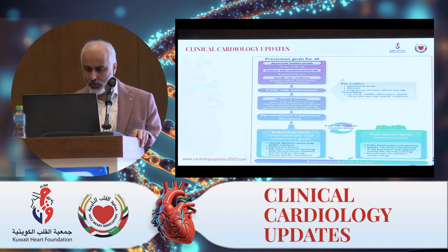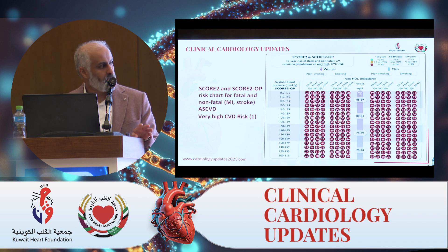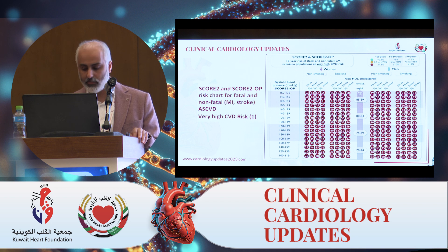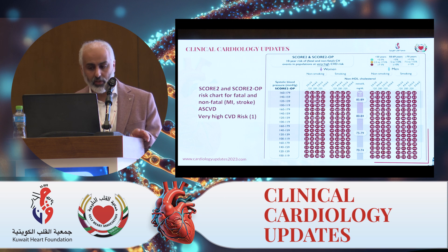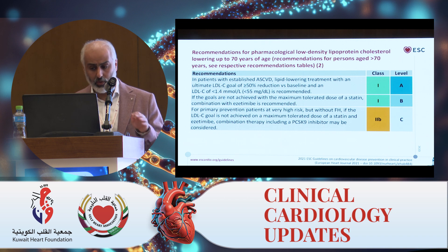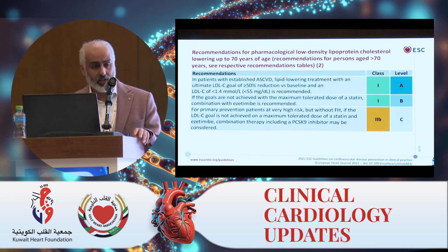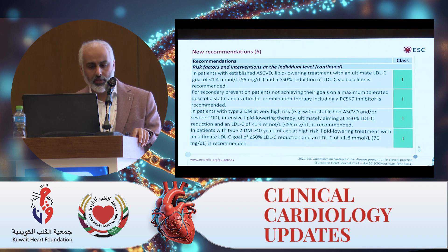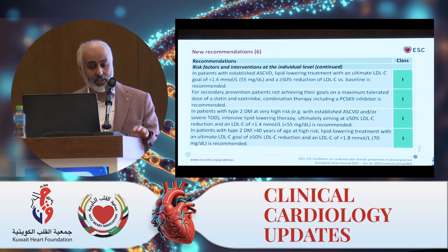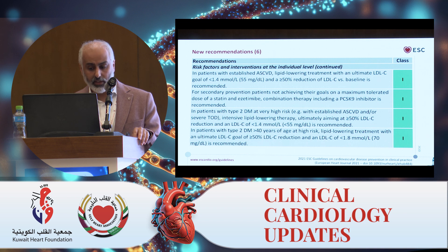In terms of the ESC 2021 guidelines — a very comprehensive paper looking at all cardiovascular risk factors and their prevention in clinical practice — the prevention goals are very similar to what we know. Looking at the newly introduced SCORE2 and SCORE2-OP for older people: first, look up your country, whether it's a high-risk or very high-risk group. In Kuwait, it's very high-risk. You should adjust for systolic blood pressure, smoking, gender, and non-HDL cholesterol. For a patient with established atherosclerotic cardiovascular disease, the target is less than 1.4 mmol/L. If you cannot achieve it with high-intensity statin, always combine with ezetimibe. If you still cannot achieve that target, there is a class A recommendation for combination therapy including a PCSK9 inhibitor. For type 2 diabetics at very high risk, the target is again less than 1.4; if only high risk, the target is less than 1.8.